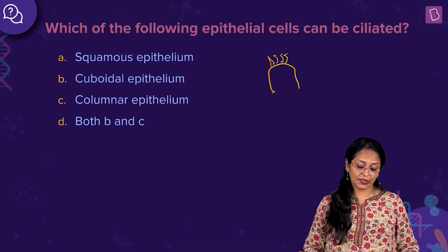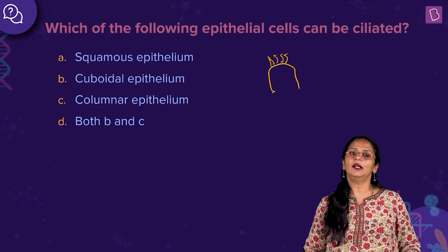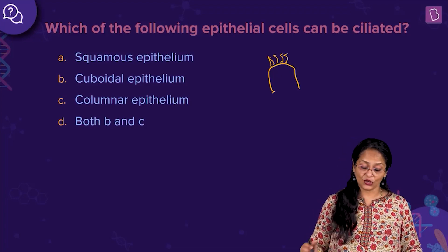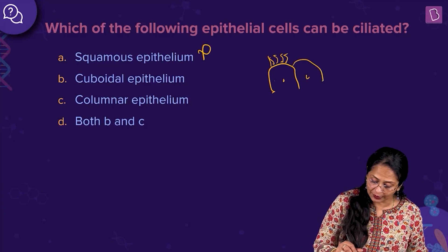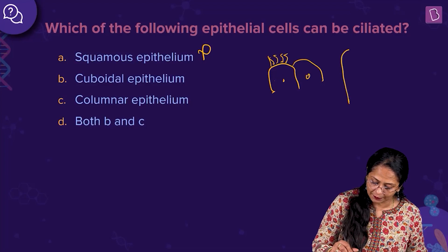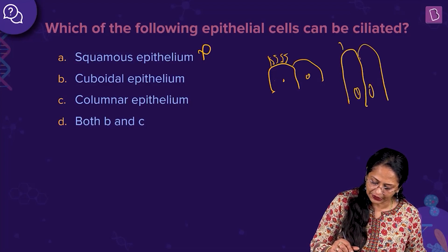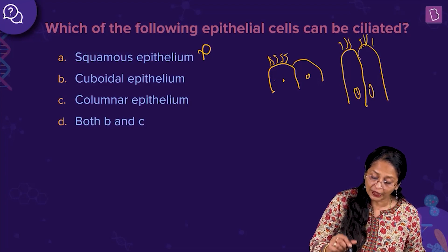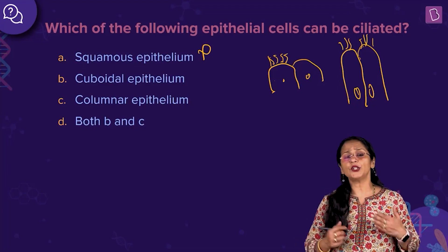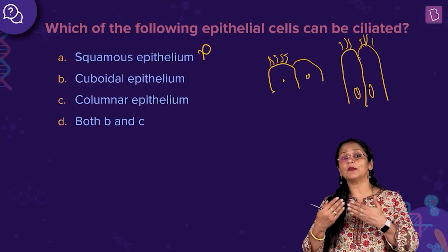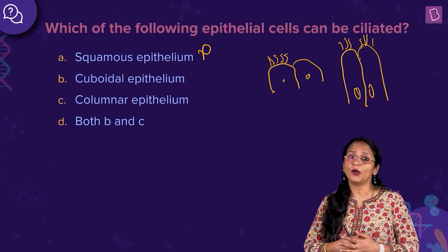Is it squamous epithelium, cuboidal epithelium, columnar epithelium, or both B and C? Children, I'm sure you know the answer. It is not squamous epithelium. Cuboidal epithelium and columnar epithelium — which is column-like or pillar-like — both cuboidal and columnar epithelial cells can have cilia. The function of cilia is to direct particles in one particular movement. You find them lining fallopian tubes or in the bronchioles.